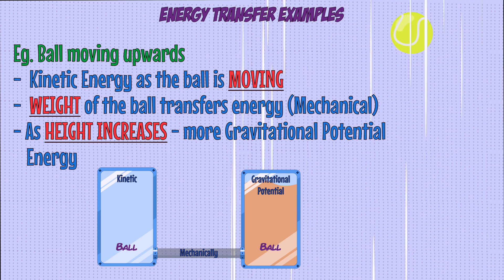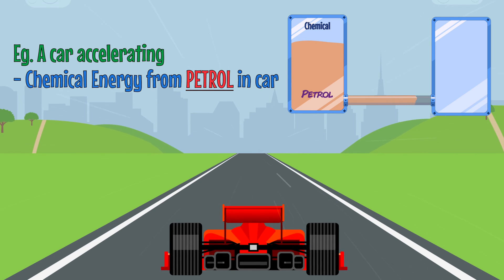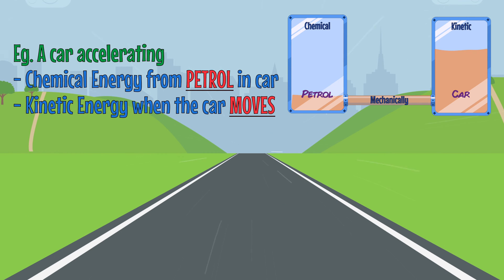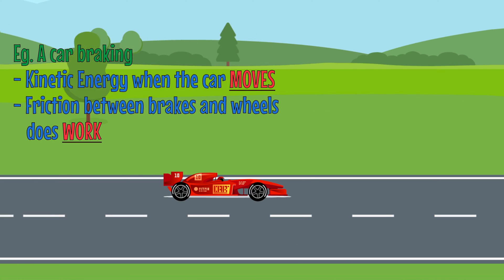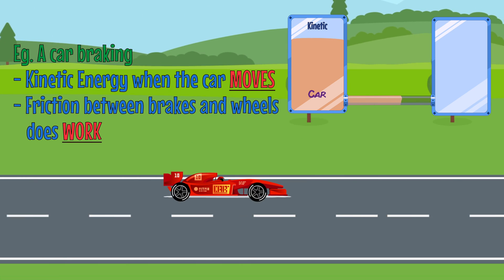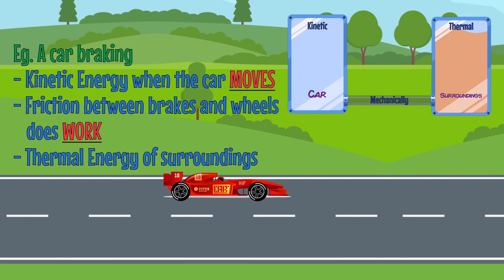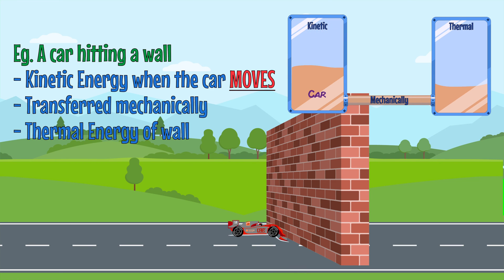For the next example, let's look at a car. If the car is accelerating, energy in the chemical energy store of the petrol reacts in the engine and transfers mechanically to the kinetic energy store of the car, making it move. If the car brakes and comes to a stop, friction between the brakes and wheels does work, transferring energy from the kinetic store mechanically to the thermal energy stores of the surroundings, such as the road and air. Finally, if the car crashes into a wall, most of the energy from its kinetic store is transferred mechanically to the thermal energy stores of the wall due to the force acting on it.